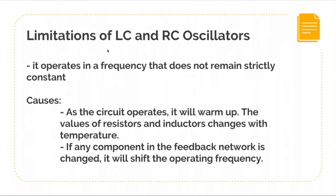That kind of drawback is a major problem for operations such as broadcasting, because the frequency tolerance should be as small as possible. The frequency bands of adjacent stations are so close to each other that if we vary our operating frequency just by a little, it could interfere or overlap with another channel's frequency, causing interference.